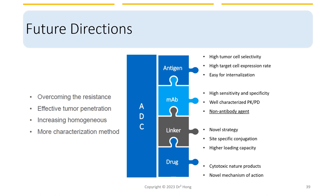Wrapping up this lecture with some thoughts on future directions of ADC: tumors have ways to evade ADCs as well, so the battle is still on to overcome known mechanisms of resistance. This may be accomplished by increasing drug penetration, identifying new antigens for targeting, and identifying new toxic drugs with novel mechanisms of action. Another interesting area is investigating non-antibody targeting agents to deliver the drug payload, such as antibody fragments or even nucleic-acid-based targeting agents. We will talk more about other novel agents in the near future. That's all for this lecture — thank you very much for watching, and I'll see you next time talking about CRISPR technology. Stay tuned.